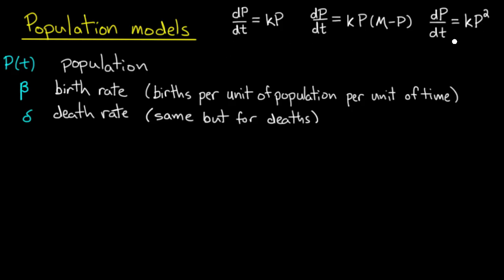I've written down another guy here, dP/dt equals kP squared, and I don't know a proper name for this one but you could call it maybe like a blowup model because population blows up in finite time in this particular model.